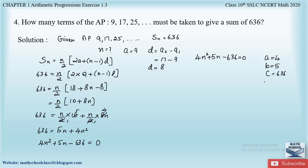We compute a × c = 4 × 636 = 2544. Since the sign of c is negative, we need two numbers whose product is 2544 and whose difference is 5 (the value of b).